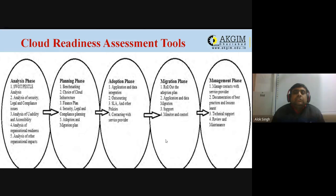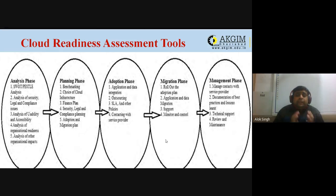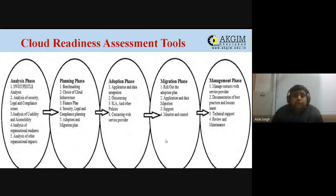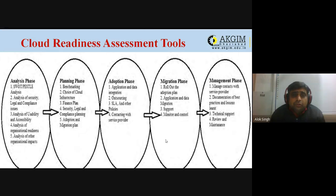In the adoption phase, the first tool is application and data integration. You will integrate applications and data, remove redundancy and duplicacy, decide what data is important, how to store it, and how to process it. Next is outsourcing — deciding whether you will handle everything with your own resources or outsource to a third party or external team.